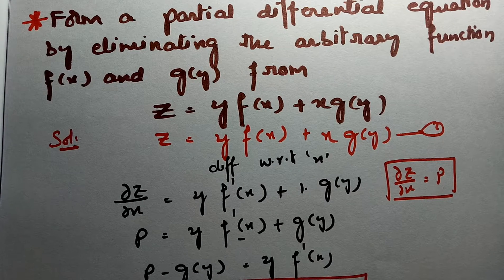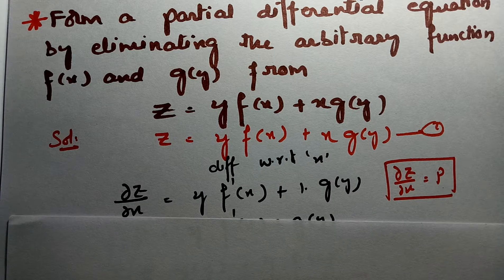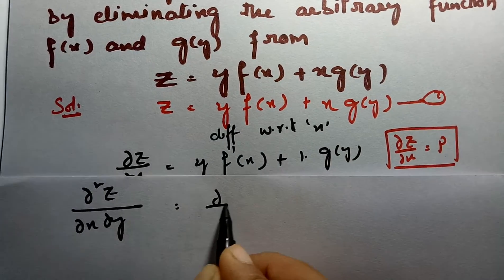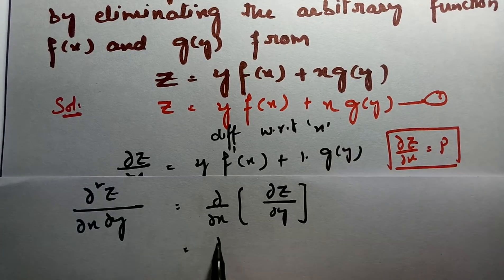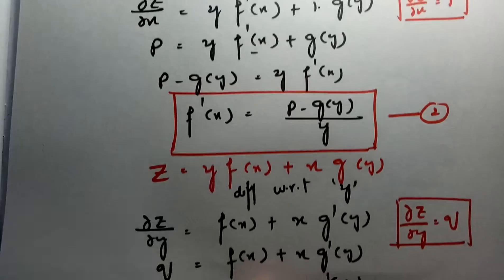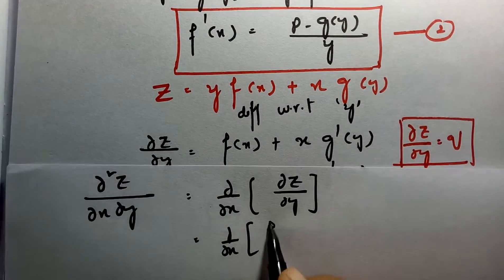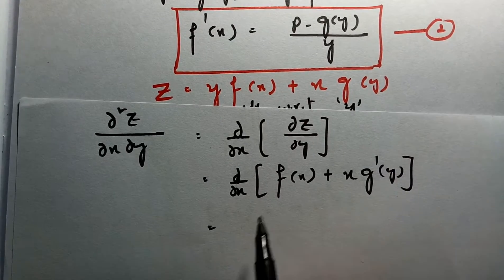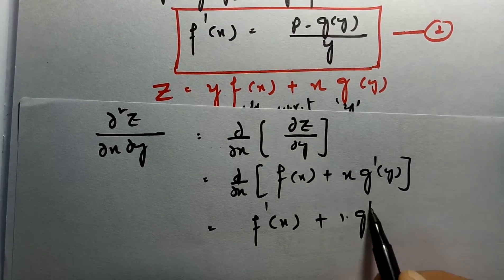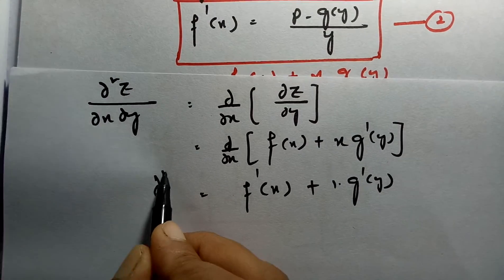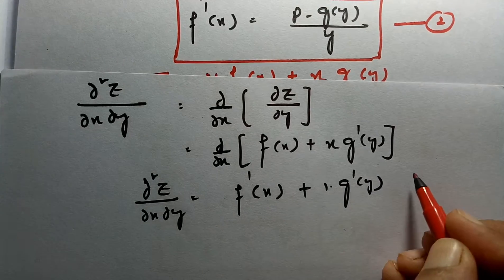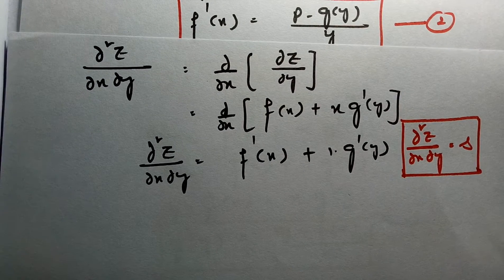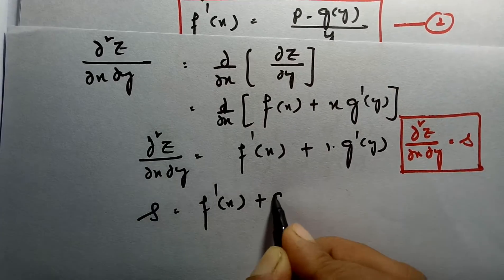These two equations are not sufficient for eliminating the functions. So I will make another one, that is ∂²z/∂x∂y, which is s. This will be ∂/∂x of ∂z/∂y, which is f(x) + x·g'(y). Differentiating with respect to x gives f'(x) + g'(y). So we have s = f'(x) + g'(y). I can write this as equation 3.